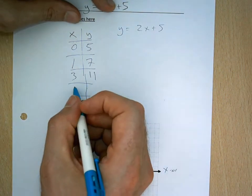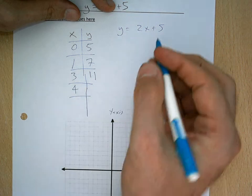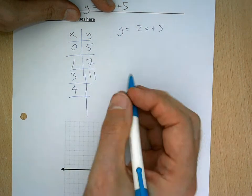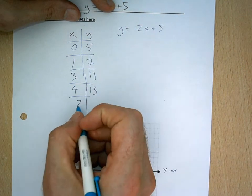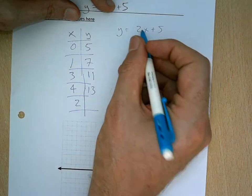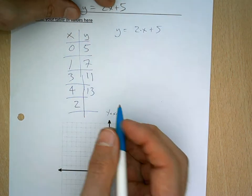And then if I put in 4, I'm going to put in 4 times 2, which is 8. Oh, I forgot 2. Might as well do that as well. And then 2 times 2 is 4, plus 5 is 9.